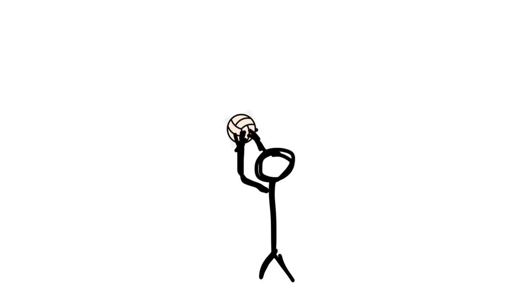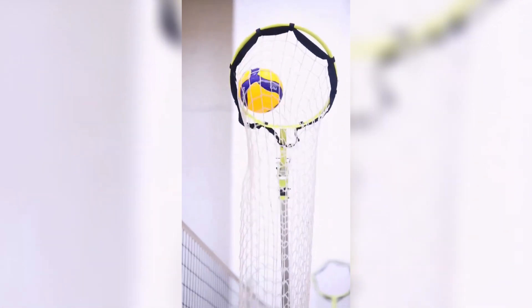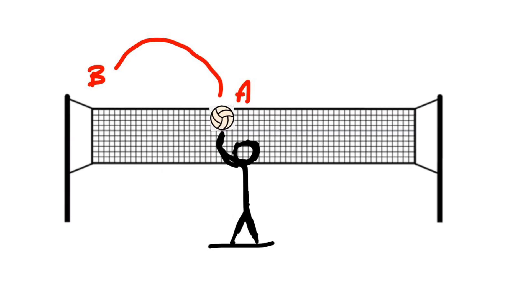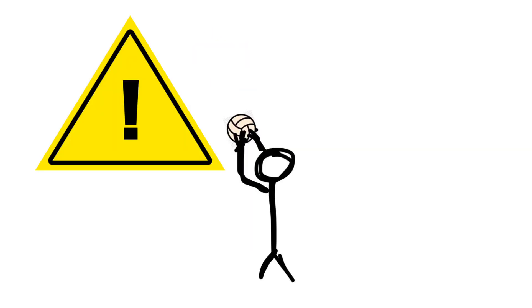This is me and I'm performing a basic set. In order for the ball to get to the hitter — point B — it has to follow a specific trajectory. The ball needs to travel at a certain angle and at a certain speed. Let's say in this example the ball needs to move at 2 meters per second from point A to point B. Please keep in mind that the numbers I use in this lesson are just examples — they are not going to be the exact values, they are only here to help me illustrate the concept more easily.